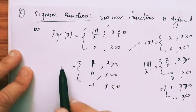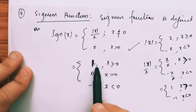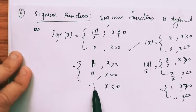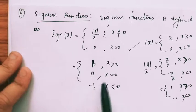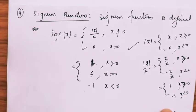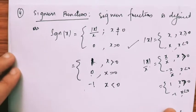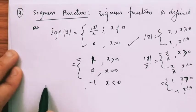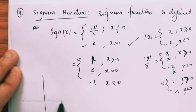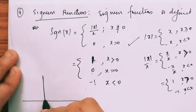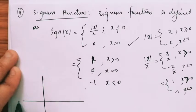So f(x) equals 1, f(x) equals 0, f(x) equals minus 1 — all are constant functions. यह हमने सबसे पहले standard function में discuss किया था। तो हम इसके graph को plot करेंगे। So, what is the X-axis and Y-axis?